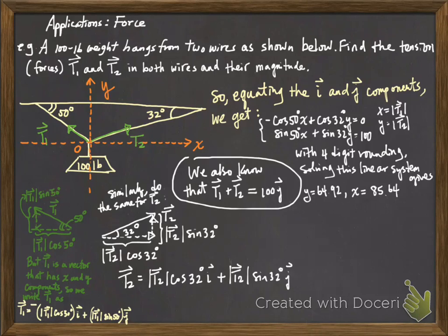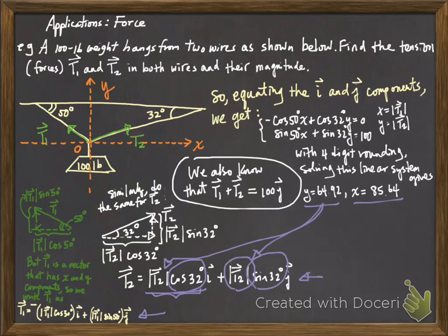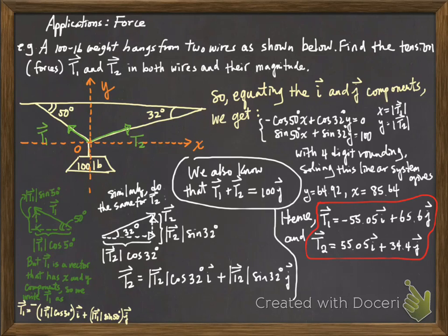To finish off the problem, all we need to do is to substitute the appropriate x and y values into the expression for T1 and T2. So for example, T2 says to do the calculation right here. Well, the magnitude of T2 was denoted by the y value, so we actually put the y value in here, and then multiply that by the cosine of 32 degrees. This is going to give you a number, and that number sits in front of the direction of i. Same thing, you have the magnitude of T2 here, but that's also equal to the y value. Multiply by the sine of 32 degrees, that gives you another number that sits in front of the j. If you do the same thing for the vector T1, you're going to get something similar. So if you follow the calculations I've just described, you should get the T1 vector to be negative 55.05i plus 65.6j, and T2 should be 55.05i plus 34.4j. And this concludes the video problem.